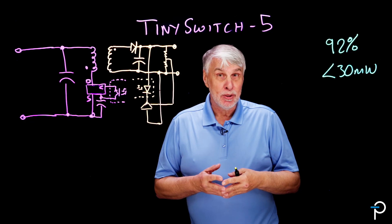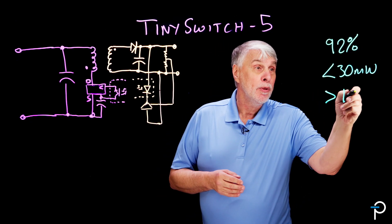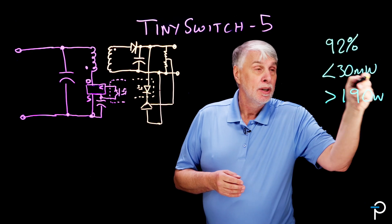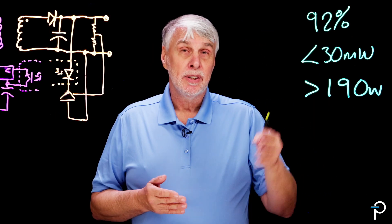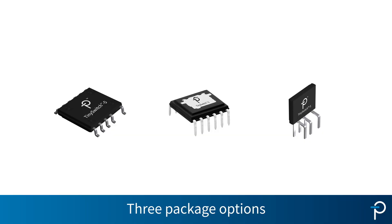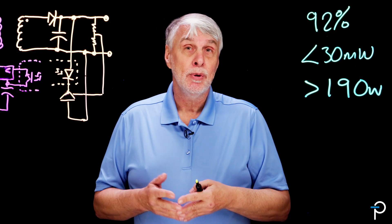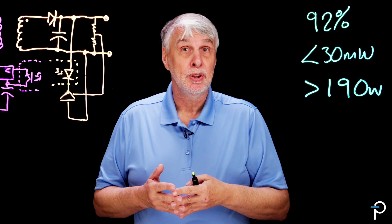Another benefit of this method of control is that we can deliver more power. TinySwitch-5 can now deliver more than 190 watts of output power. To deliver 190 watts of output power, we need different package options. And TinySwitch-5 comes with through-hole or surface mount devices. Surface mount allows us to use PCB cooling. Through-hole devices typically give us the option to use a heat sink.